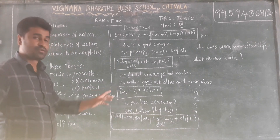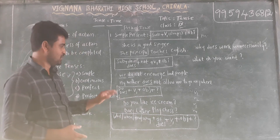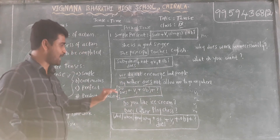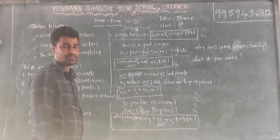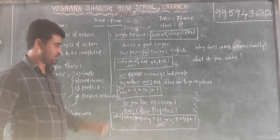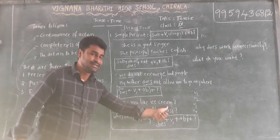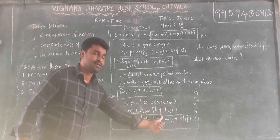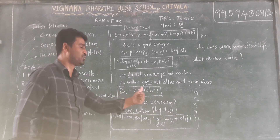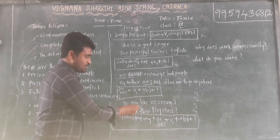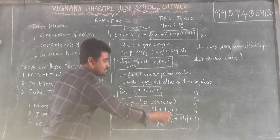Number three, question forms — yes or no type questions. The sentence pattern will be: Do/Does + Subject + V1 + Object + question mark. 'Does' is used for third person singular: he, she, it. For example: 'Do you like ice cream?' 'Does Lata play chess?'